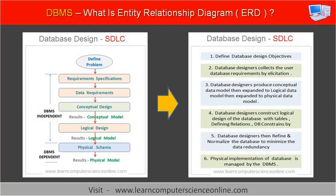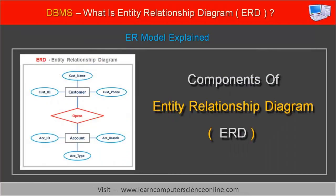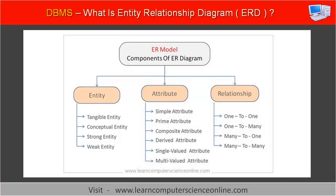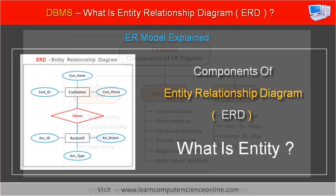Let us now understand the different components of the Entity Relationship Diagram. The ER model consists of four major components. These components are: first, the Entity; second, the Attributes; third, the Relationships; and fourth, the Cardinality.